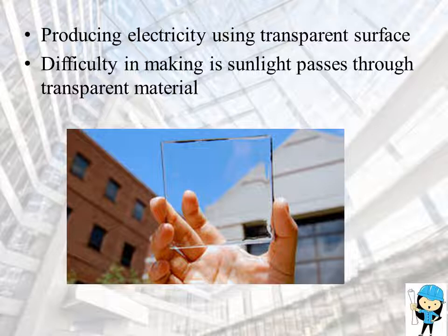What will be the difficulty in making it? The main difficulty is making the sunlight pass through the transparent material, which is impossible. As we mentioned earlier, the complete light falling on the transparent material will be reflected, so the process of generating electricity in a solar cell cannot be started because there is no light absorbed through it.